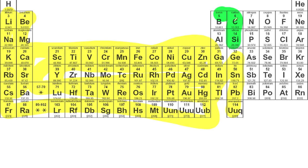Moving further over, this small part of the periodic table contains elements that bond through covalent networks — large lattices of covalently bonded atoms. Further over towards the right, we have elements that bond through diatomic molecules. We also need to pay special attention to phosphorus, which bonds as P4, and sulfur, which bonds as S8 molecules. All the blue highlighted elements bond through small covalently bonded molecules.